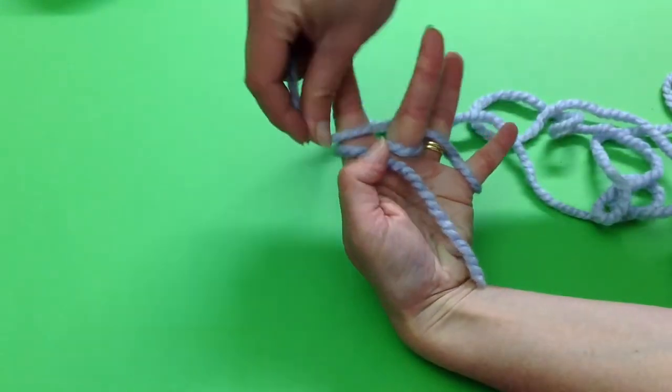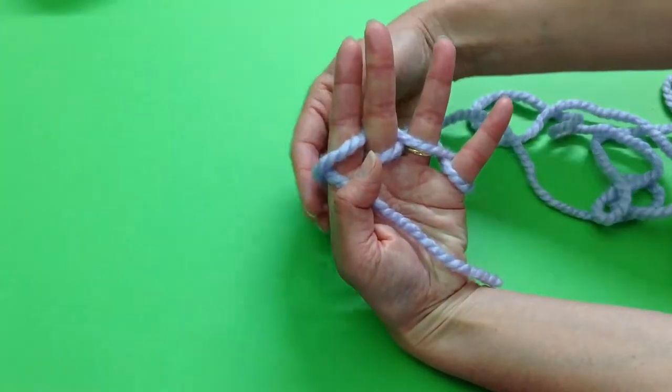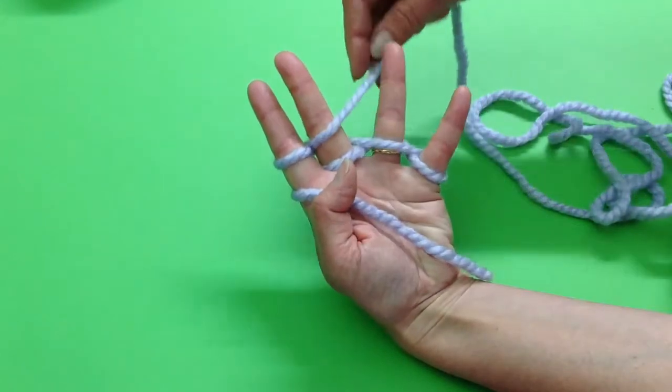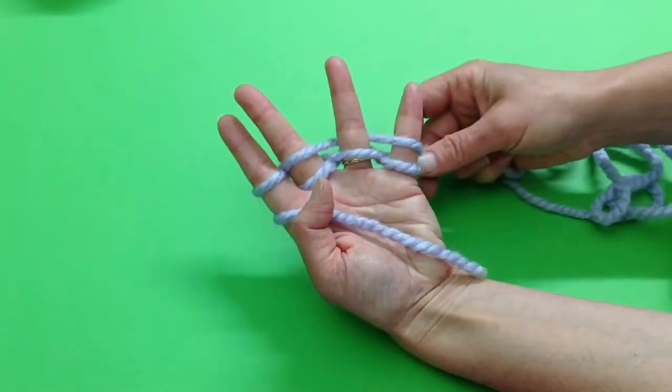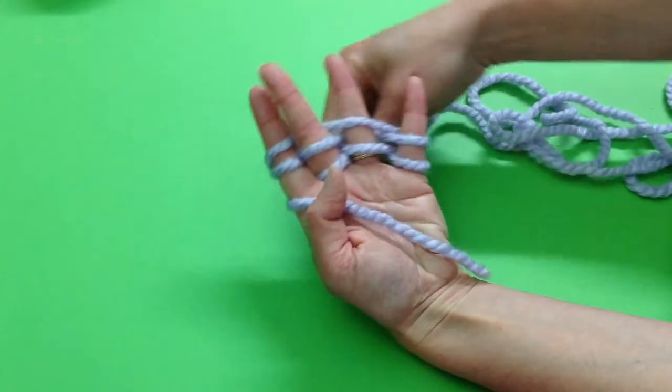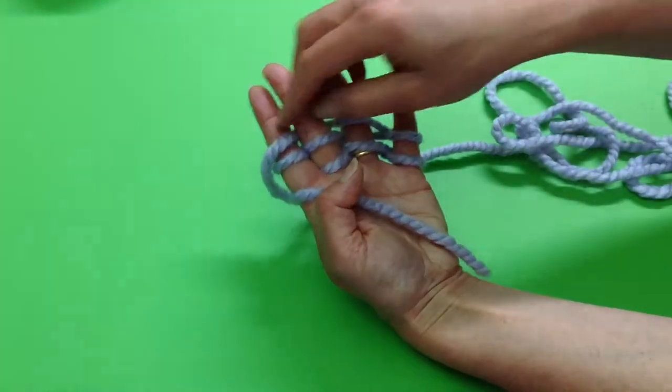Okay, and then back again. You're going to weave it around, make sure it's nice and tight, and then one more time. You've got two loops on every finger, and that's what you need.